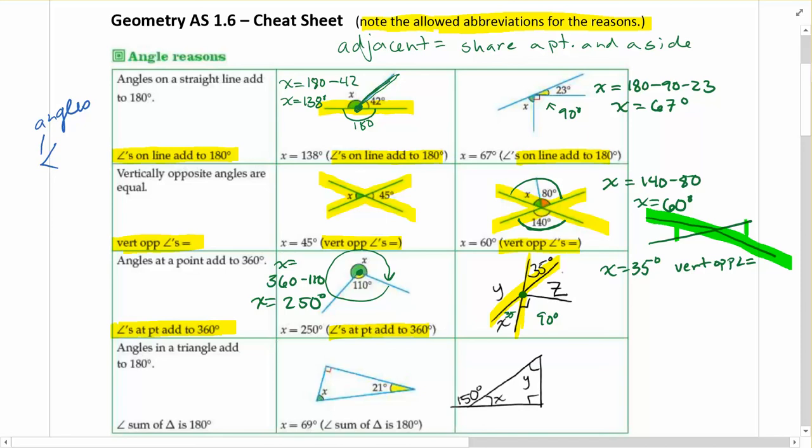Another situation that I might notice here is that these guys are all on a straight line, so they should add up to 180. So I could do z is equal to 180 minus 90 minus 35, so in this case I get z is equal to 55 degrees, and my reason for that would be angles on straight line sum to 180.